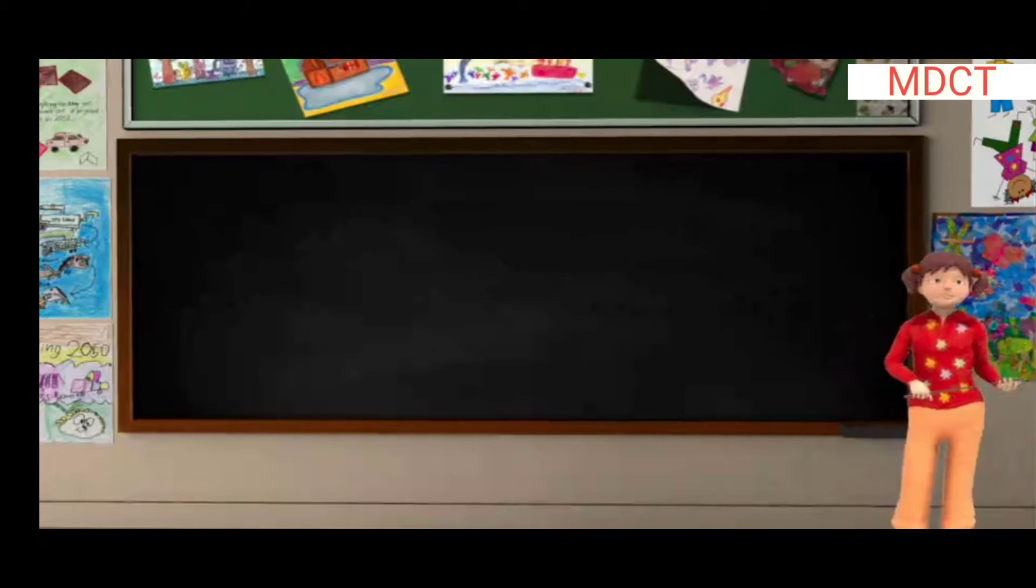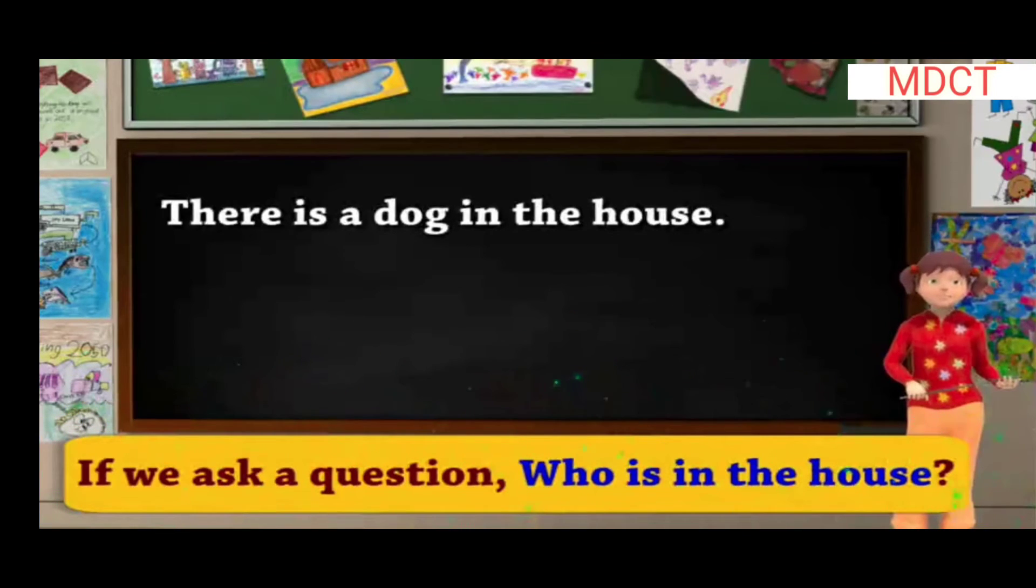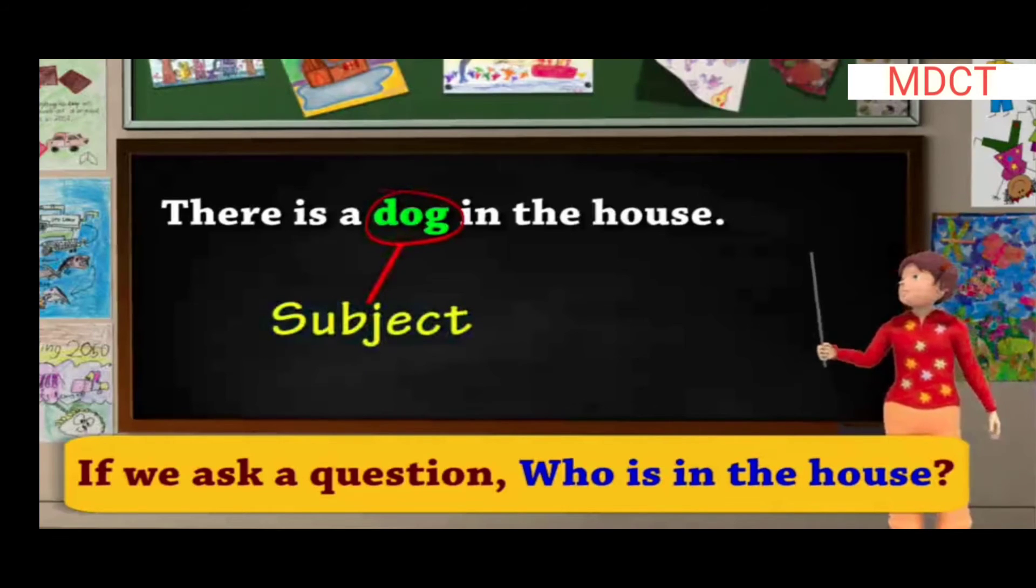For example, in the sentence, there is a dog in the house. If we ask a question, who is in the house? The answer to this question will be the subject, which in this case is the dog.